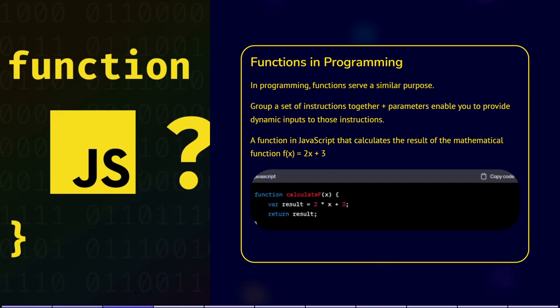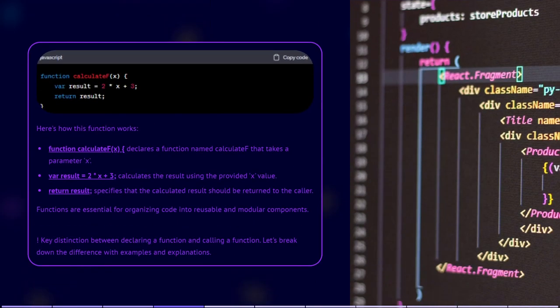Here's how this function works. Function calculateF(x) declares a function named calculateF that takes in the parameter of x. Var result = 2 * x + 3 calculates the result using the provided x value. Return result specifies that the calculated result should be returned to the caller.